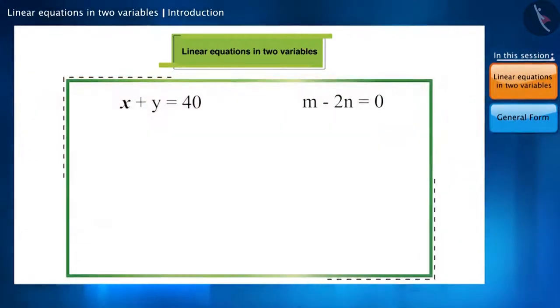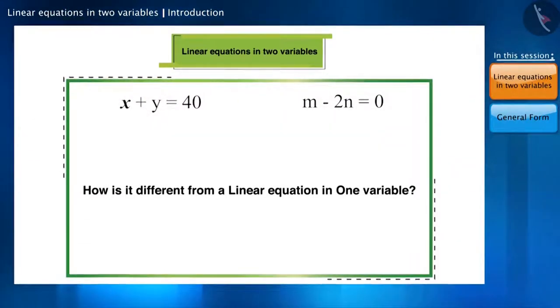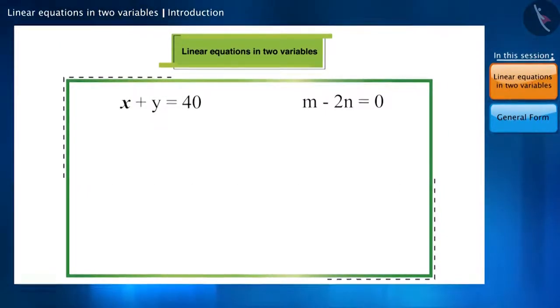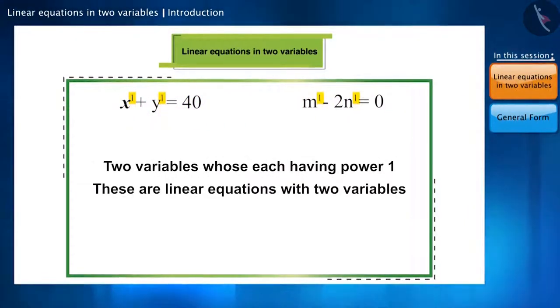Can you tell how these two equations are different from a linear equation in one variable? Come on, let's see. In these two equations, the variables are X, Y and M, N. The maximum power of both is one. Hence, both of them are linear equations in two variables.